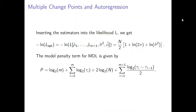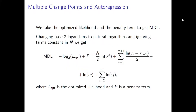We insert the estimators into the likelihood L to get the optimized likelihood, denoted L-opt. This gives us the first component needed in the minimum description length function. The next component is the penalty term, which depends on the number of model parameters. The optimized likelihood and the penalty term are then combined to give us the MDL. We convert base-2 logarithms to natural logarithms, ignore all terms constant in N, and get the final form for the MDL.